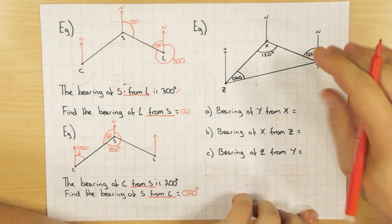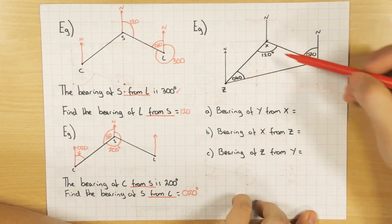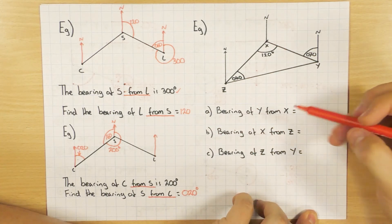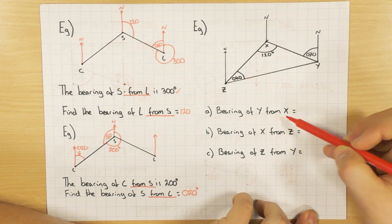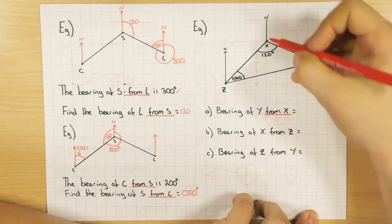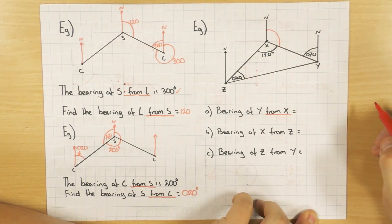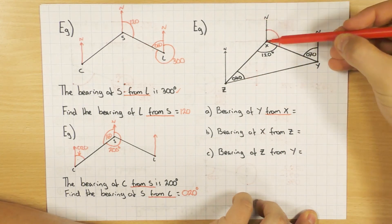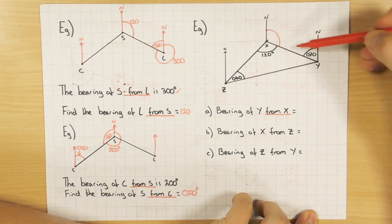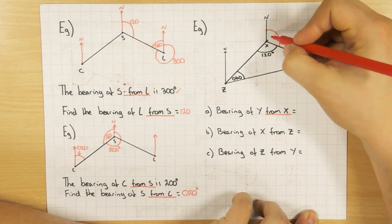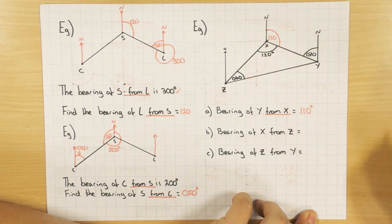The last example involves a triangle. For Part A, bearing of Y from X — from X, north clockwise to Y. Using the interior rule: if the given angle is 70 degrees, then 70 and the bearing add to 180, so the bearing of Y from X is 110 degrees.